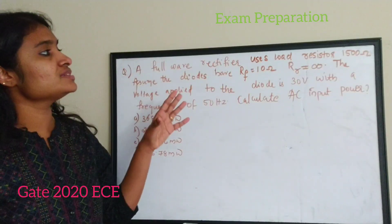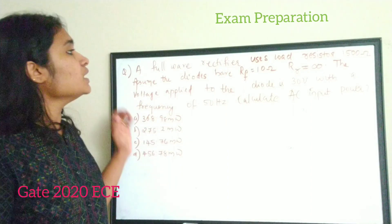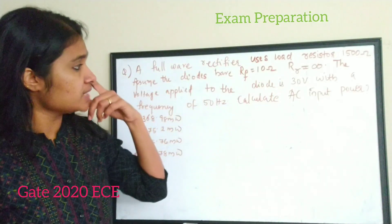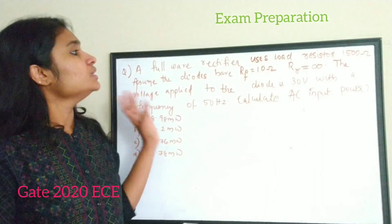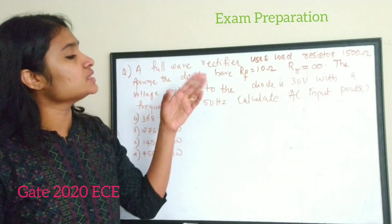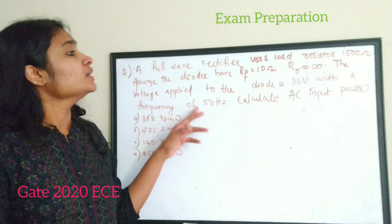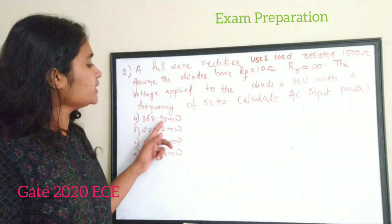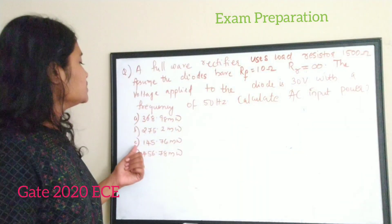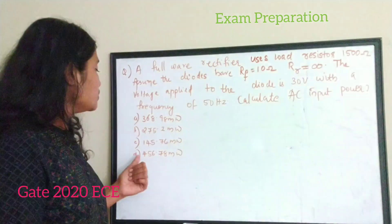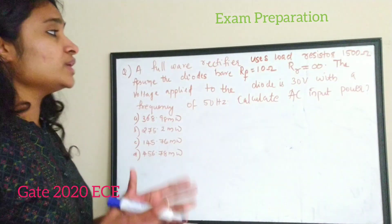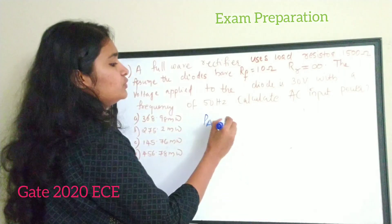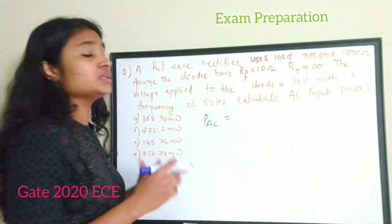A full wave rectifier uses a load resistor of 1500 ohm. Assume that the diode has a forward resistance r_f of 10 ohm and reverse resistance of infinity. The voltage applied to the diode is 30 volt with a frequency of 50 Hz. Calculate the AC input power. Options: A — 360.98 mW, B — 275.2 mW, C — 145.76 mW, or D — 456.78 mW.